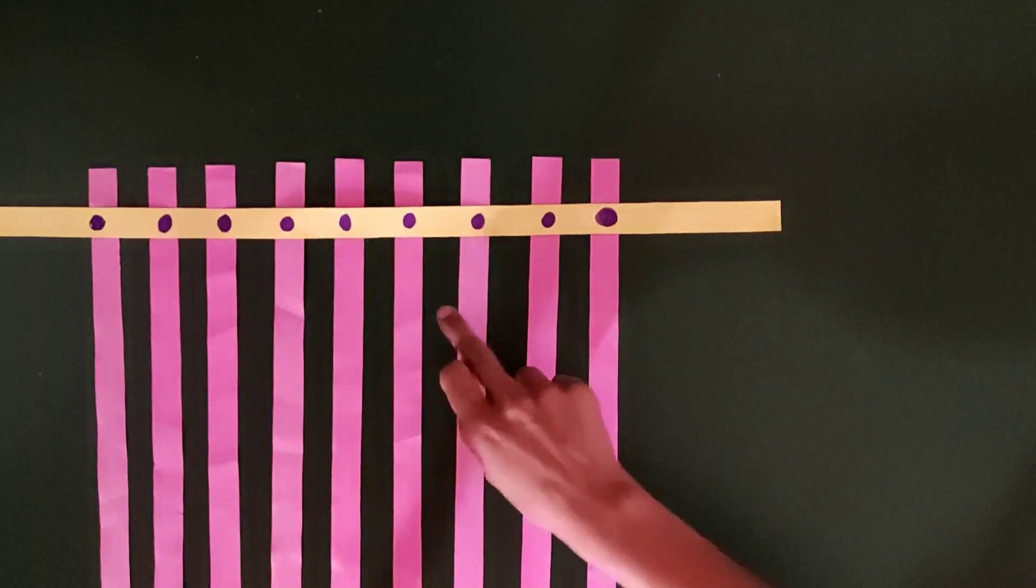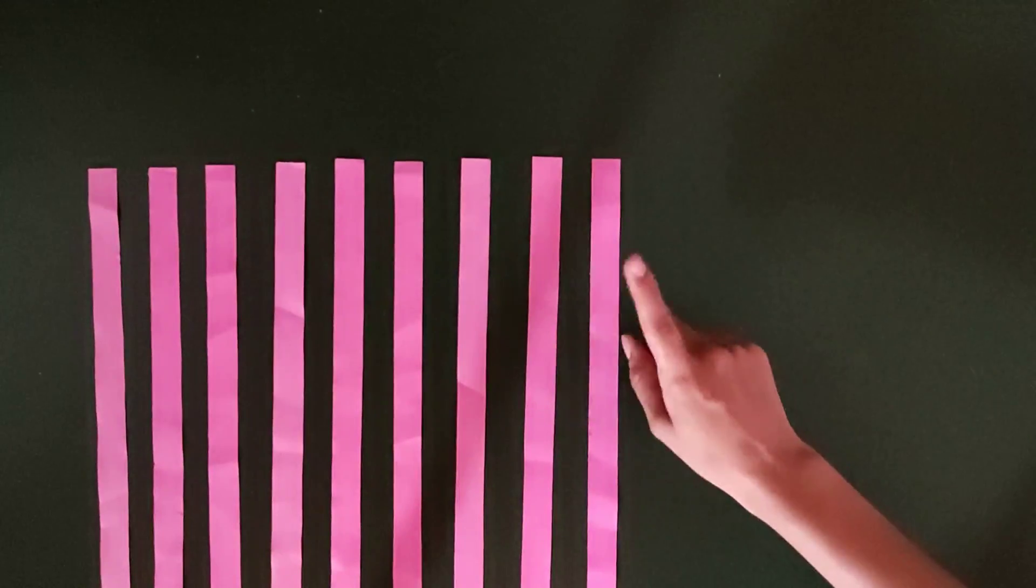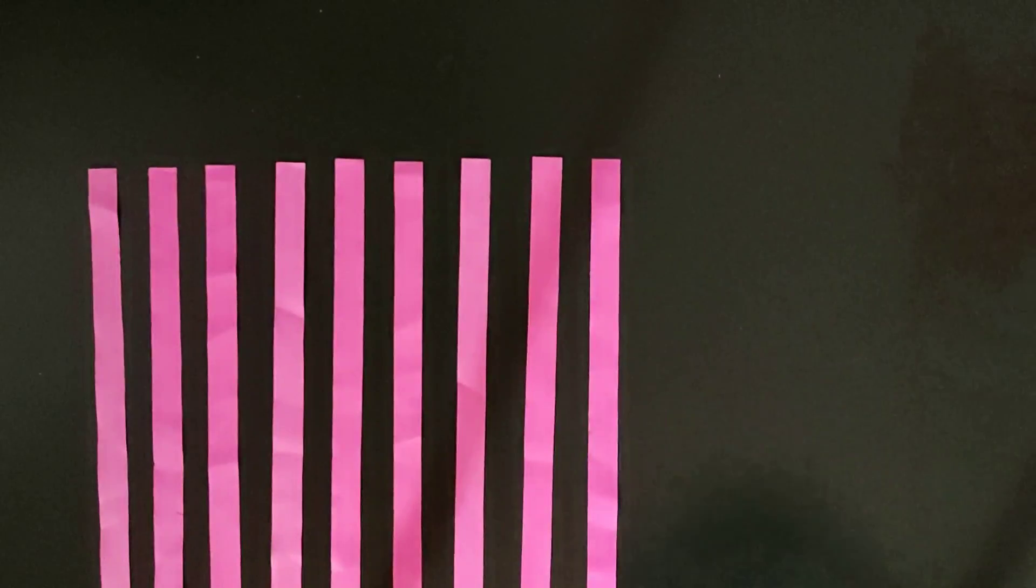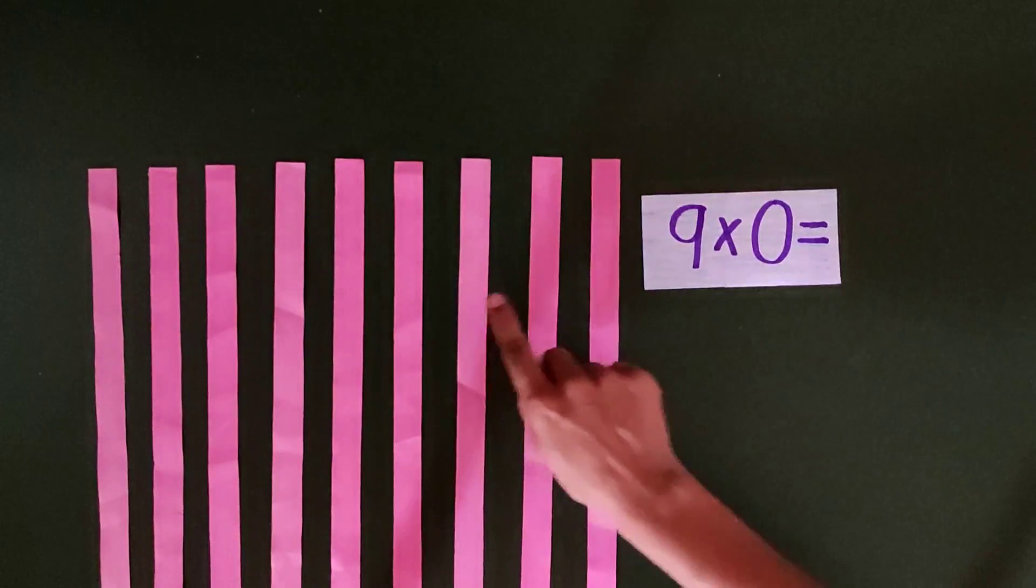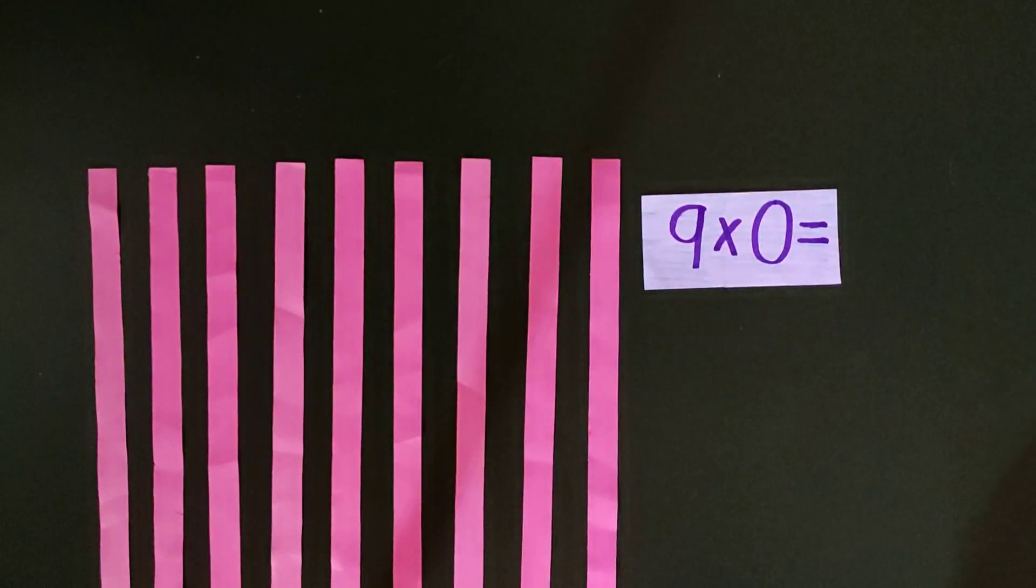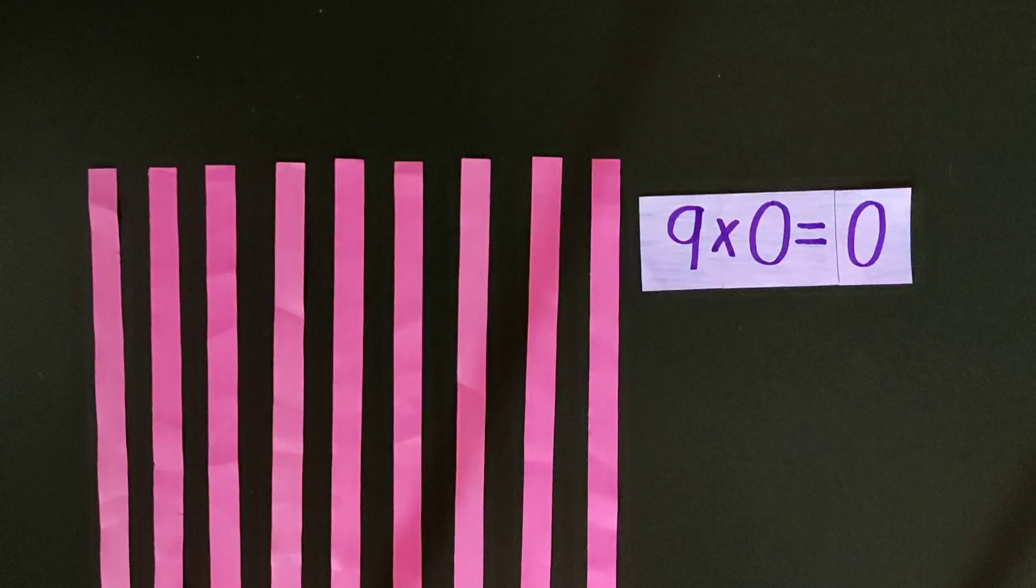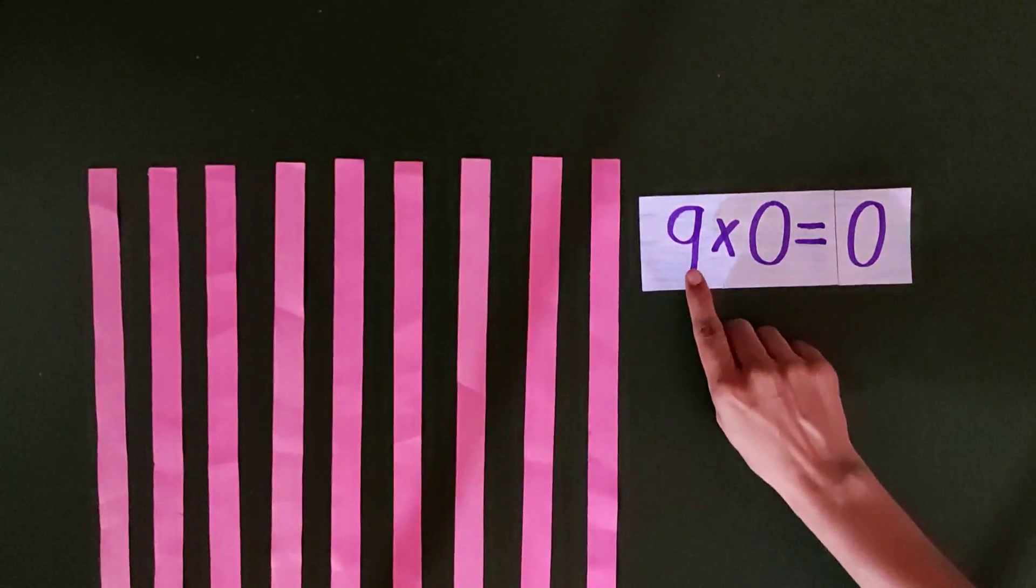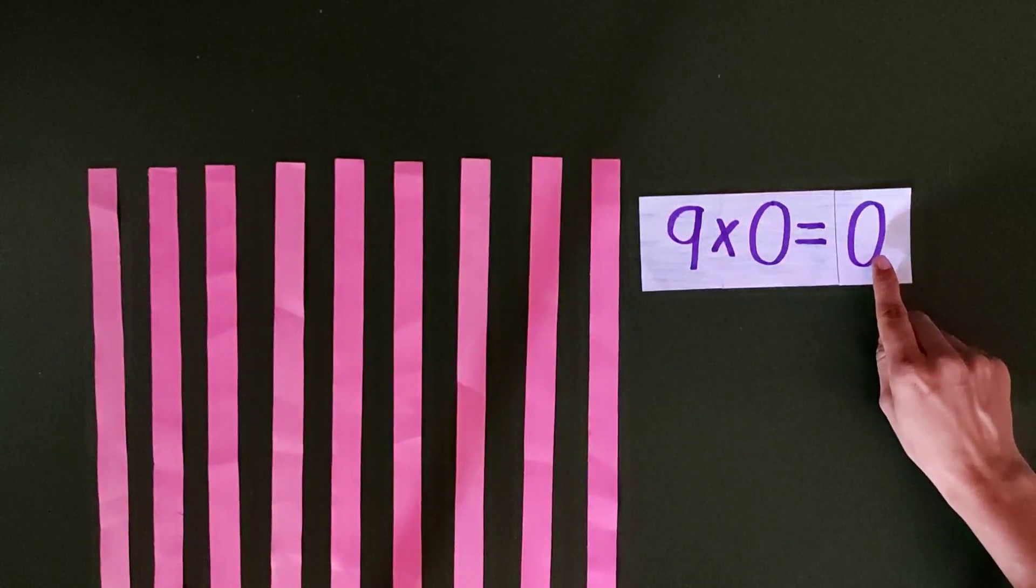In this example, if I take out the horizontal strip, we are only left with 9 vertical strips. We'll write it as 9 multiplied by 0. Now you see, when there are no horizontal strips, there are no intersecting points. They are 0. So what we learn? We learn that 9 when multiplied by 0 equals 0.